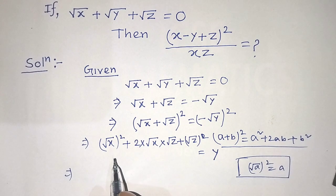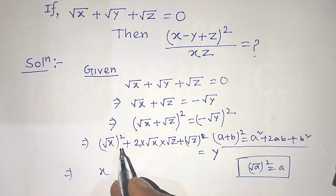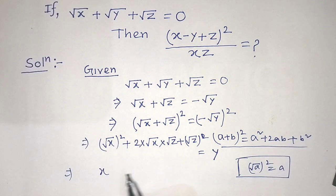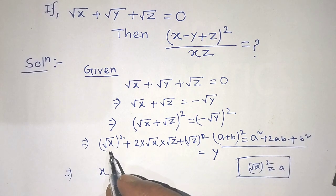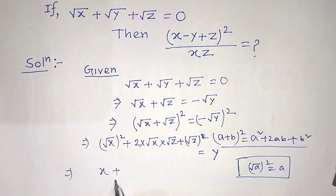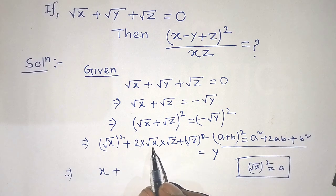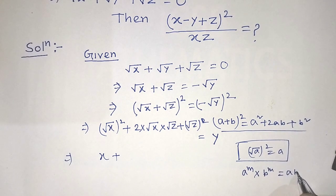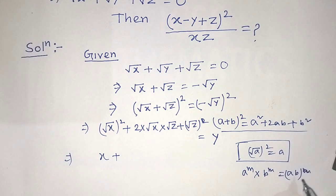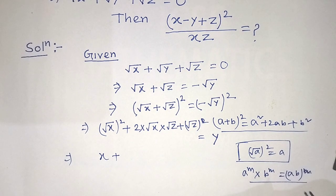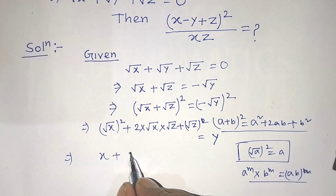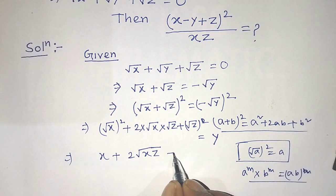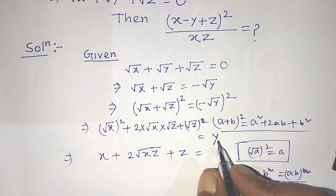So from the first term, root of x squared gives us x. We know that (root of a) whole squared is equal to a. In the second term, we apply the formula a to the power m into b to the power m equals (a into b) to the power m, so 2 into root of x into root of z becomes 2 root of xz. And the third term gives us z. So we have: x plus 2 root of xz plus z is equal to y.